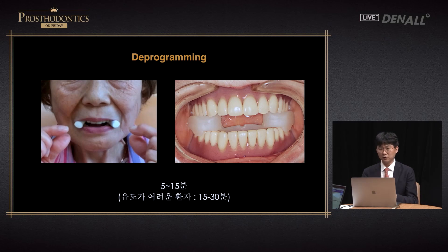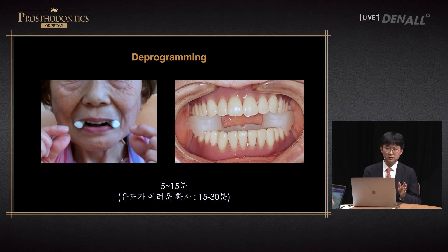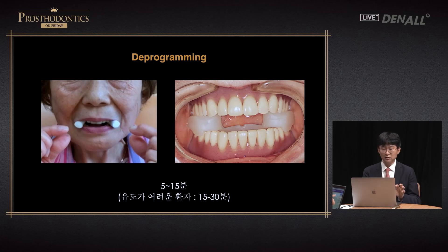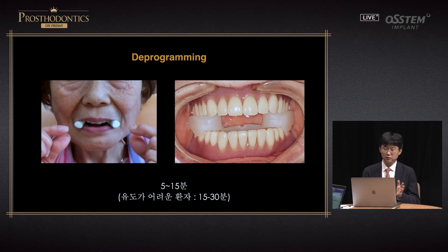Deprogramming can make a condyle very comfortable and inducing it very easy — but when you really do it, you will feel the big difference. Biting on cotton rolls helps for deprogramming. There is also a product available for this purpose — if you chew on it, it helps deprogram the muscles. Opening and closing the mouth to the maximum as an exercise before obtaining the CR would prove very helpful for deprogramming. After about five minutes of using it, you will feel the effect.